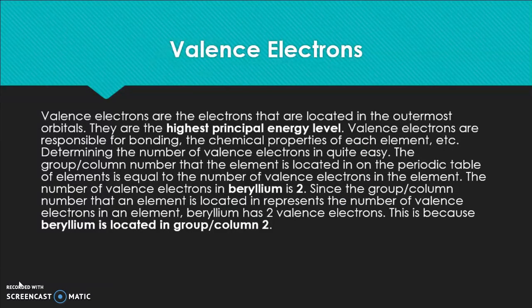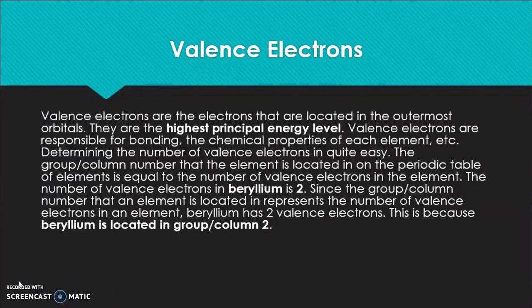Valence electrons in beryllium. Valence electrons are the electrons located in the outermost orbitals of an element — they are at the highest principal energy level. Valence electrons are responsible for bonding, the chemical properties of each element, and other responsibilities. Determining the number of valence electrons is quite easy: the group/column number that the element is located in on the periodic table is equal to the number of valence electrons. For example, beryllium has two valence electrons, considering that it is located in group/column 2.